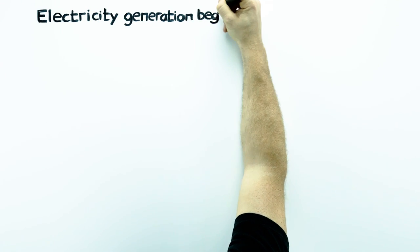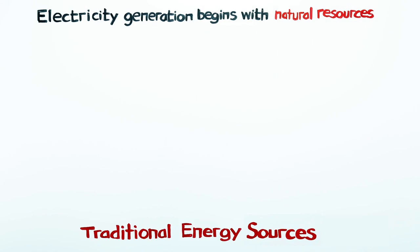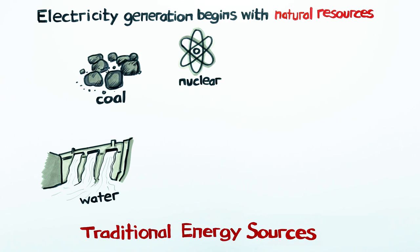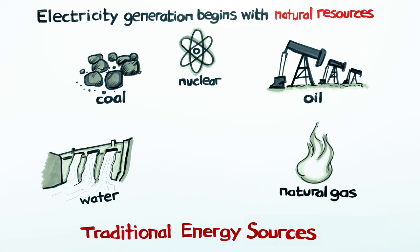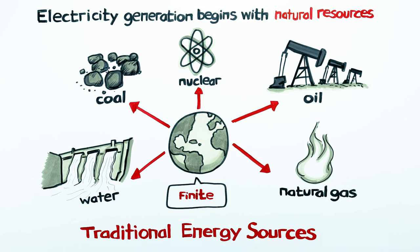Electricity generation begins with natural resources. More traditional energy sources consist of water, coal, nuclear, oil, and natural gas. These resources come from the earth and have a relatively finite supply.